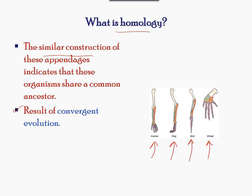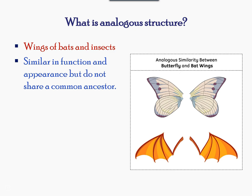This is a result of convergent evolution, when two species that are not related via a recent common ancestor become more similar. The reason behind convergent evolution is the buildup of adaptations for survival of that species. There are many types of evidence for evolution, such as analogous structures, where functions are similar but not derived from a common ancestor.